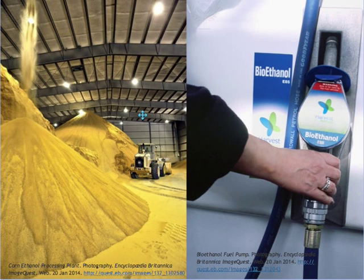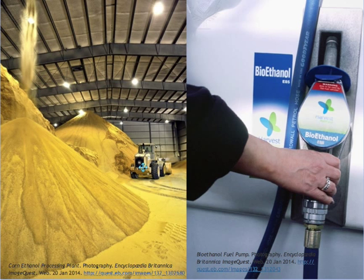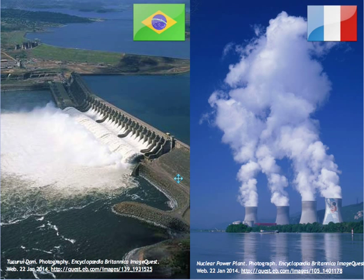A more recent application of biomass energy is the production of ethanol from corn in the United States, to use as a fuel additive. A similar and even more extensive program is in use in Brazil, where sugarcane is the source of bioethanol. Most countries use a range of renewable and non-renewable sources of energy.